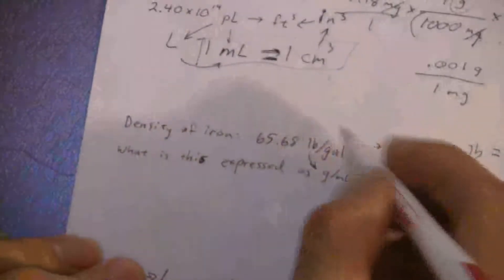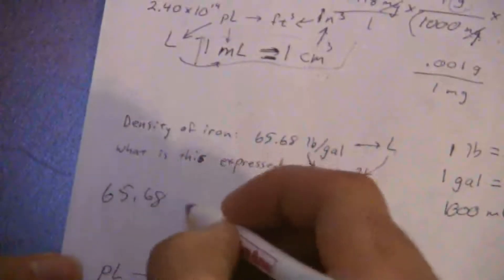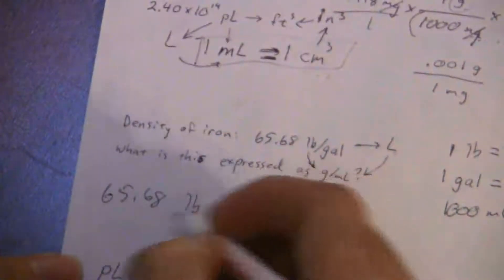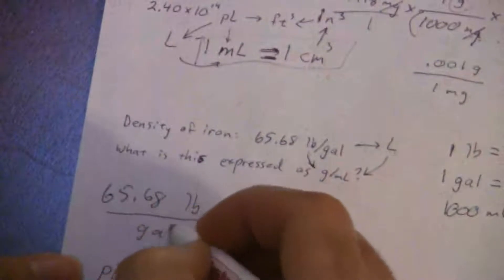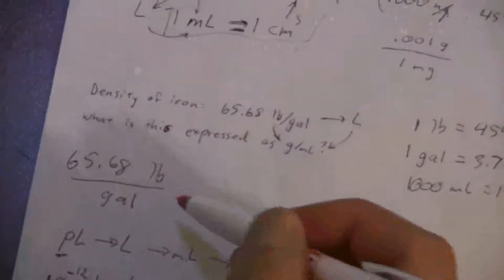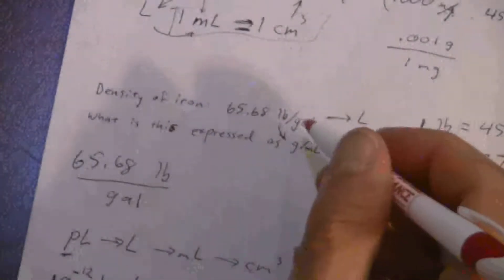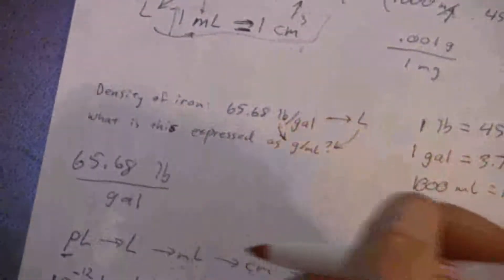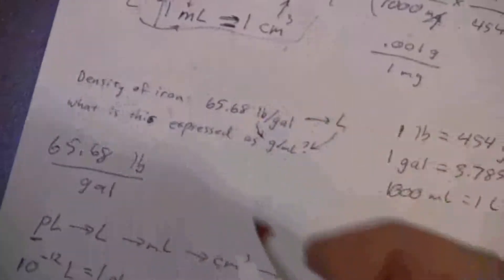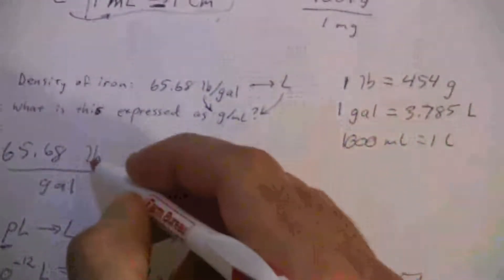So let's start with what we're given here: 65.68 pounds per gallon. I've written it kind of in that fractional format. Whereas before we just put a one under there, but since I have fractional units I'll put the unit on the bottom and that will help to keep things separate.